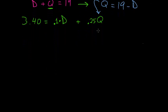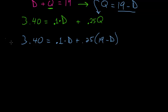We have 3.40 equals 0.1 times d plus 0.25 times this new value for quarters, which is 19 minus d. Now our equation only contains the variable for dimes, so we can solve for that.